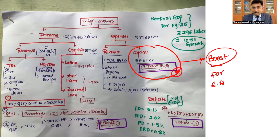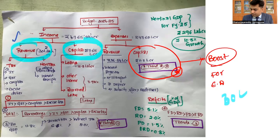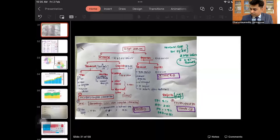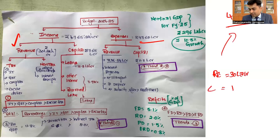We have total expenses of 47.65 lakh crores, so you should have revenue income for that. For this 47.65 lakh crores, the government said we are going to have income from revenue receipts as well as capital receipts. In the revenue receipts side, they said we are going to have 30 lakh crores. With capital receipts of 17 lakh crores, together you build this total. So total revenue income is greater than capital income for the government.